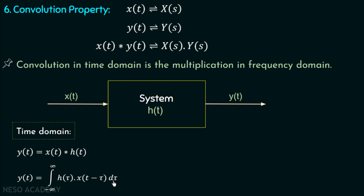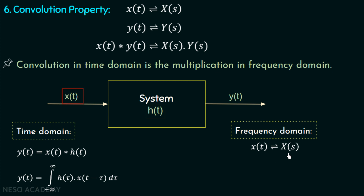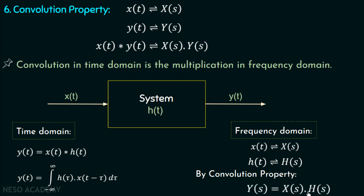We can see that the convolution operation is very complex and it is difficult to calculate the output directly. But if we switch to the frequency domain by taking the Laplace transforms of these two functions, then X will be the Laplace transform of x, and H will be the Laplace transform of h, the impulse response. By the convolution property, Y can be easily calculated as Y equals X multiplied by H. Here Y is the Laplace transform of y, and if we want the time domain function, we can take the inverse Laplace transform of Y. In this way, using the convolution property of Laplace transform, we can easily find the output of any LTI system.